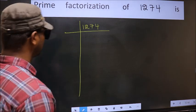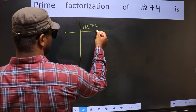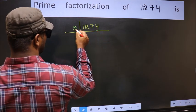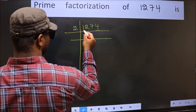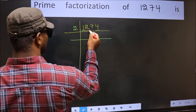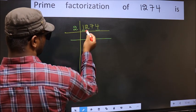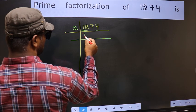Next. Over here the last digit 4 is even, so take 2. First number 1 is smaller than 2, so take 2 numbers: 12. When do we get 12 in the 2 table? 2, 6, 12.